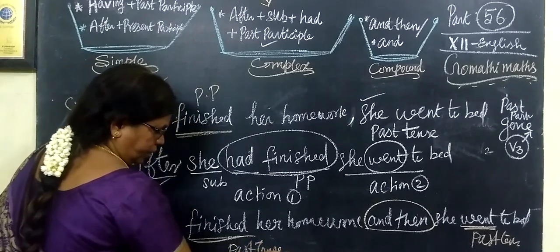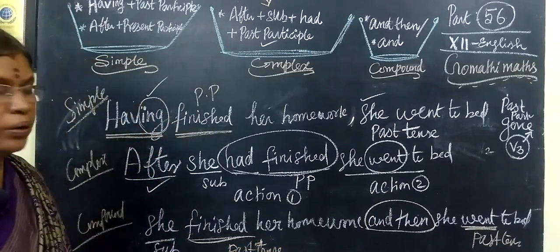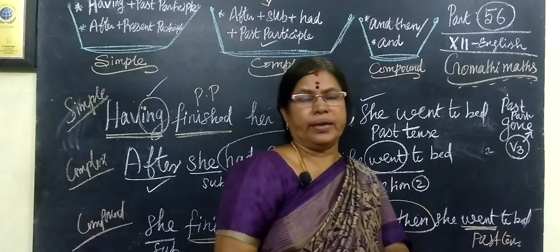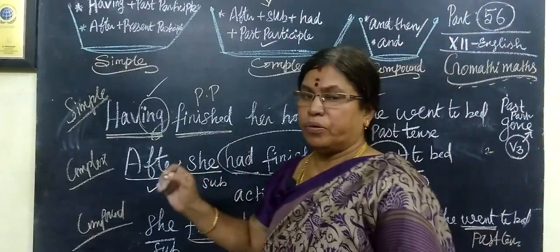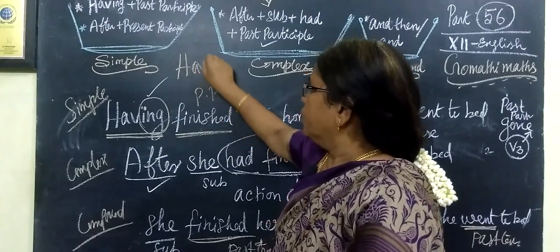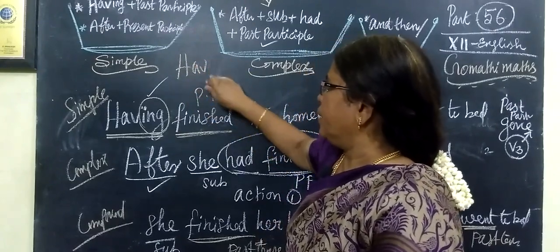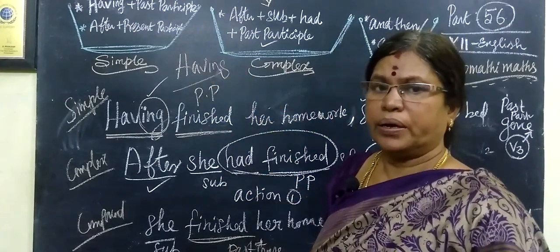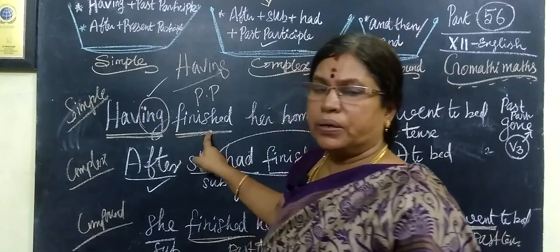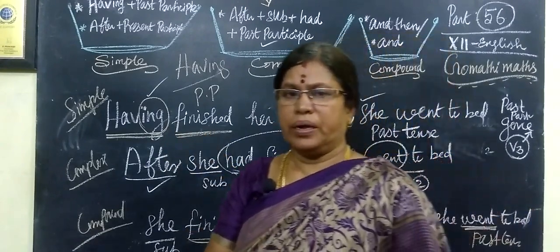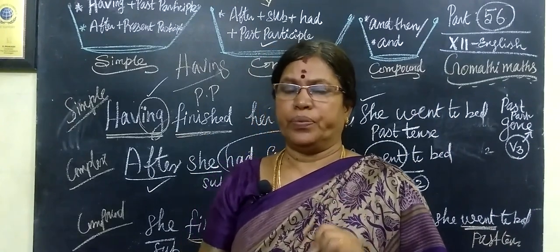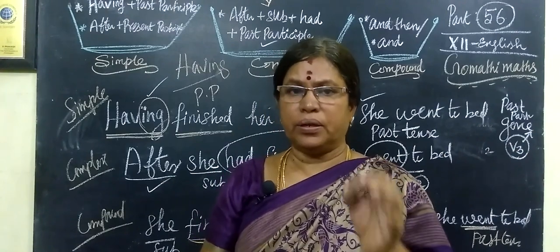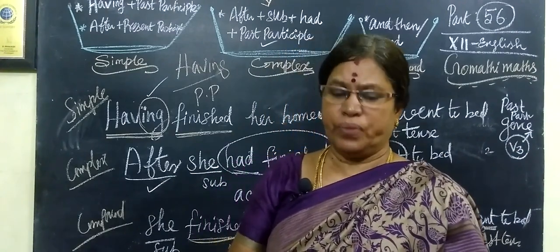So one more time. There are three verb forms. For example: go, went, gone. Come, came, come. The third one is the past participle — V1, V2, V3. So: having plus past participle is the structure for the simple sentence.